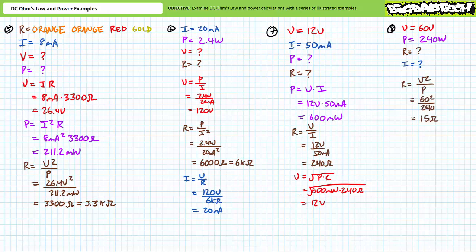Our next problem features an element known to be consuming 240 watts of power from a 60 volt source. We're being asked to solve for the resistance and the current. Resistance is equal to voltage squared divided by power. Substituting in our given values yields a resistance of 15 ohms. Current is equal to power divided by voltage. Substituting in our given values yields 4 amps of current. A supporting calculation verifies these results, where voltage is equal to current times resistance. Substituting in our calculated values does indeed confirm this element is experiencing a 60 volt differential.